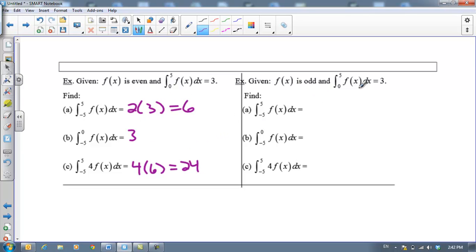Now if f is odd, and we have the same integral from 0 to 5 as 3, then our integral from -5 to 5 is going to equal 0, because to the left it's going to be a negative value. And from -5 to 0, it would be negative 3. And then the same concept here, we can pull the 4 out and multiply it times our answer in a. 4 times 0 is 0. So that's that, and I will see you guys tomorrow.